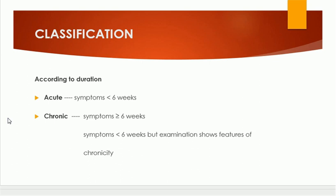We can also classify anal fissure according to duration: it can be acute or chronic. When the symptoms are less than six weeks in duration, we say this is acute anal fissure. On the other hand, when symptoms prolong more than six weeks, or even if symptoms are less than six weeks but on examination we find features of chronicity, it is classified as chronic.